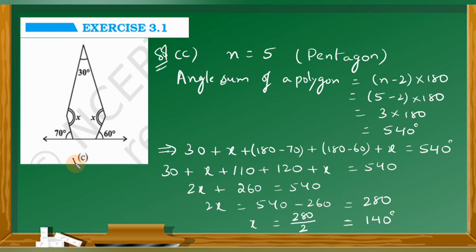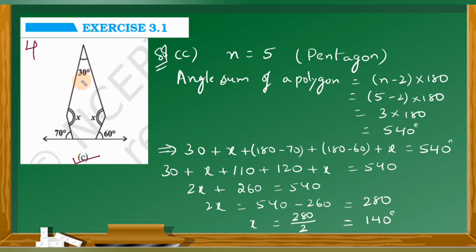Next question is question number c. Observe this figure carefully — how many sides does it have? 1, 2, 3, 4, 5. So it has 5 sides. We cannot call it a quadrilateral, because a quadrilateral has 4 sides. A 5-sided figure is called a pentagon — it is a polygon. For a polygon, the angle sum formula is: angle sum equals (n minus 2) into 180 degrees.